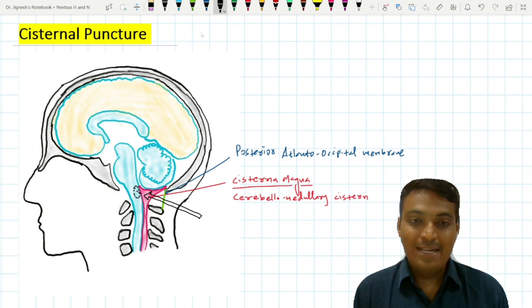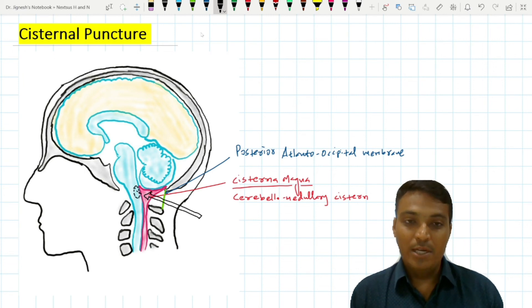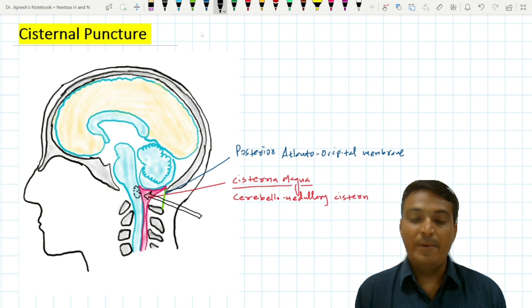If injury occurs to these vital centers within the medulla oblongata, it may lead to sudden death of the patient. This is the clinical importance of cisternal puncture. Cisternal puncture is also called suboccipital puncture because it is done via the suboccipital triangle.